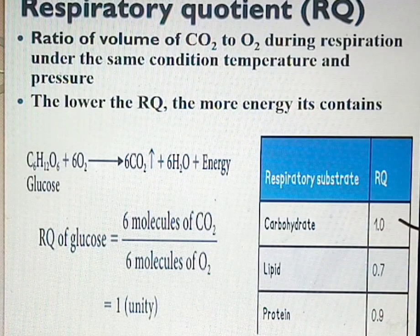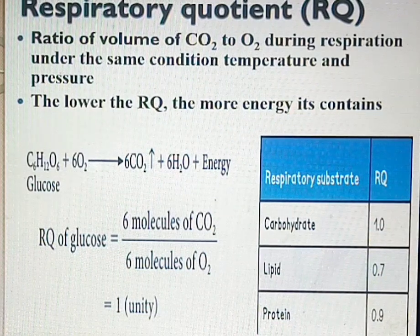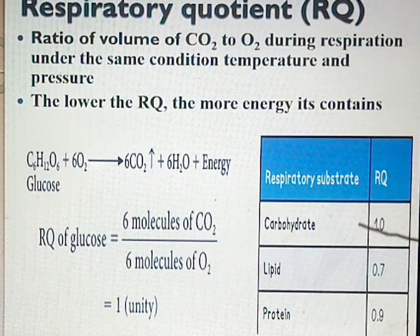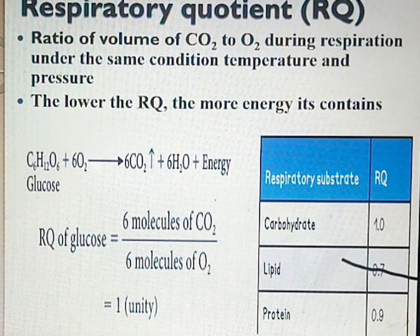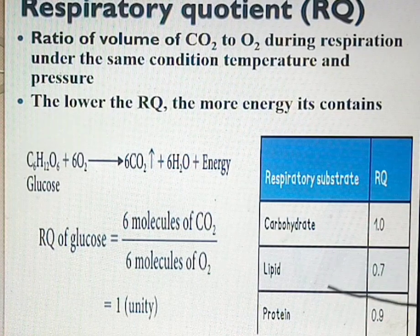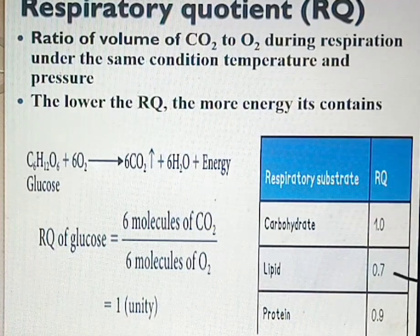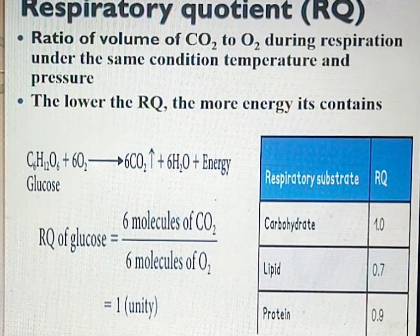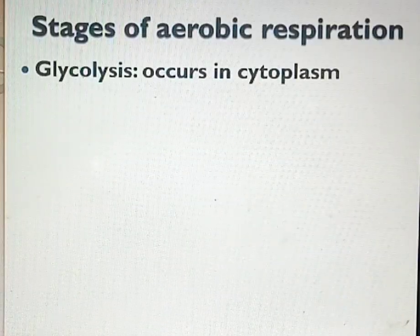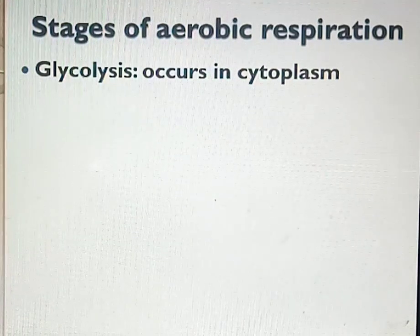This is in the opposite direction of the amount of energy generated from each substrate. For instance, if you have 20 grams each of lipid, carbohydrate, and protein, lipid will give you more energy — it contains more calories — followed by protein, then carbohydrate. But in terms of respiratory quotient, lipid gives 0.7 (the lowest), followed by protein, followed by carbohydrate.